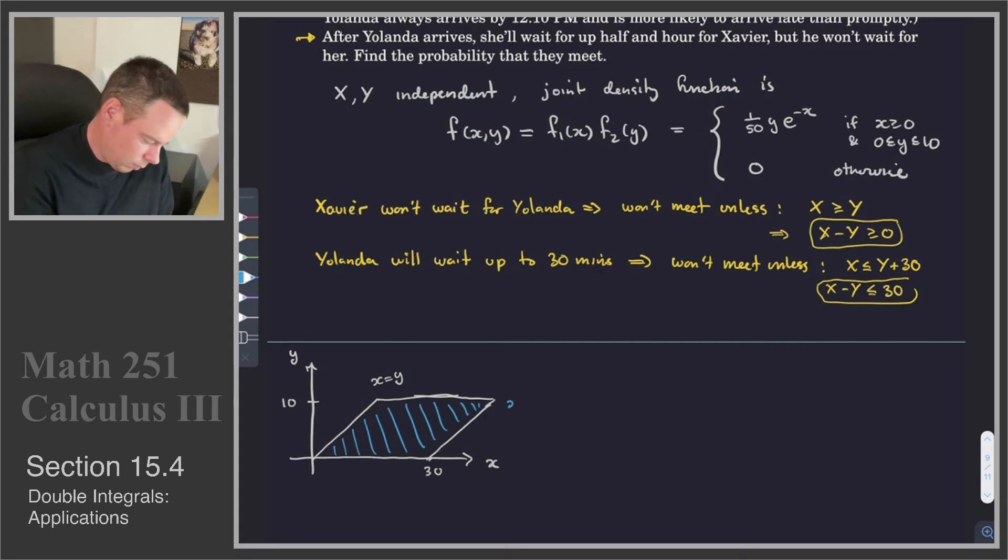I'll fill in the last one here, this is X minus Y is equal to 30. That's that right boundary curve. And then this one was X equals Y. And that top one was Y equals 10. So that's what's going to allow them to meet. So that's the region we're going to integrate over.